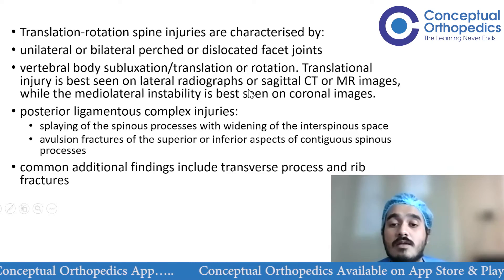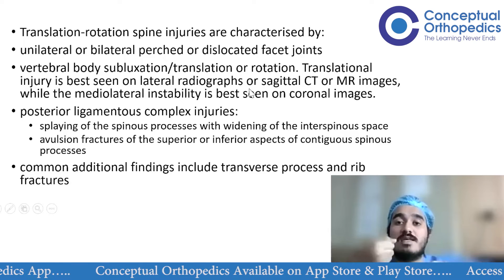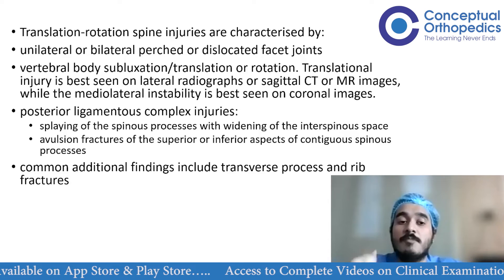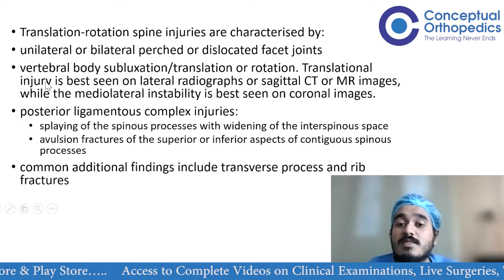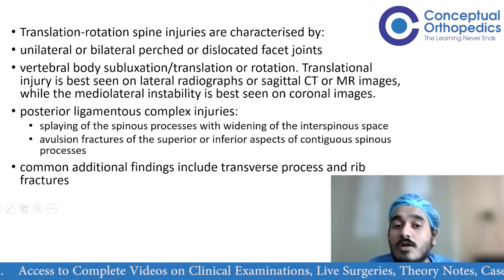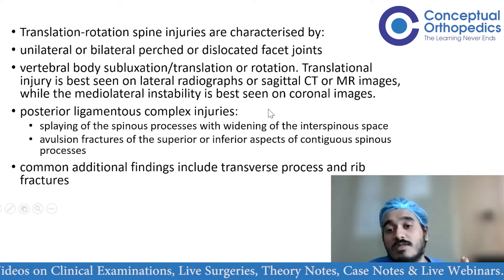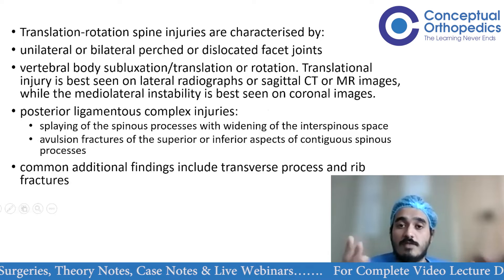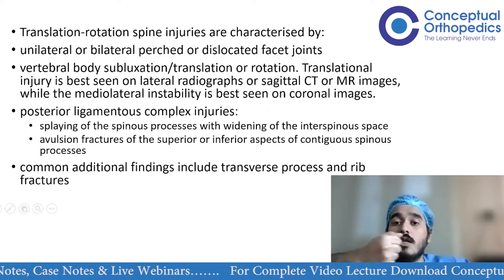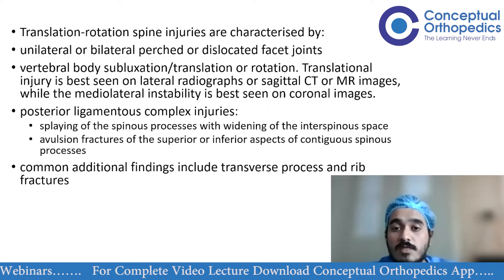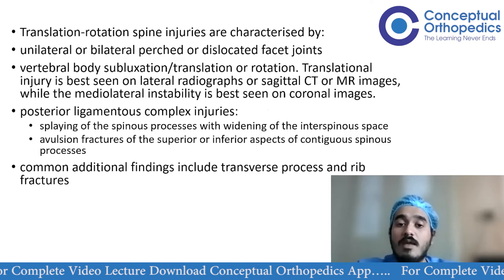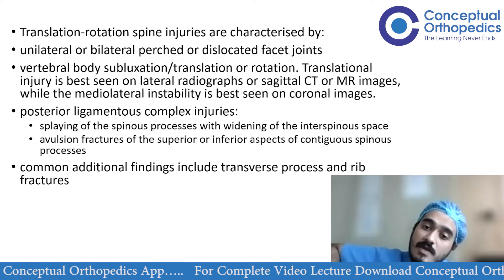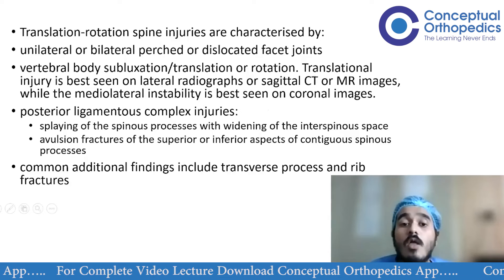On lateral X-ray, the upper and lower parts of the column may have no contact with each other. Translation injuries are best seen on lateral radiographs or sagittal CT or MRI images. Mediolateral instability is seen on coronal images — when there is horizontal displacement in the coronal plane, it is visualized on coronal imaging from the front.